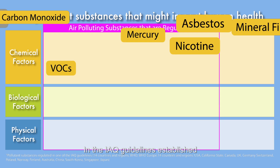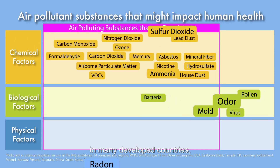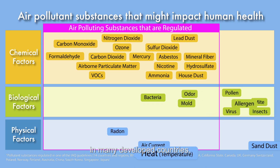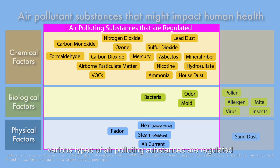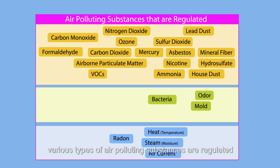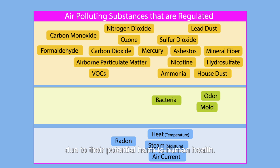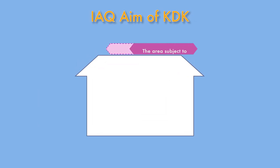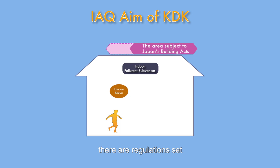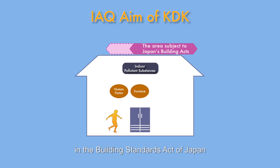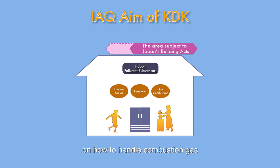In the IAQ guidelines established in many developed countries, various types of air polluting substances are regulated due to their potential harm to human health. Likewise, there are regulations set in the Building Standards Act of Japan on how to handle combustion gas and sick house syndrome.